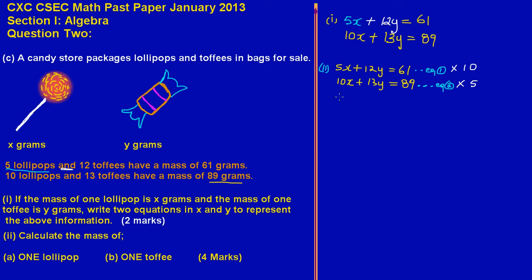Multiplying equation 1 by 10: 10 × 5x = 50x, 10 × 12y = 120y, 10 × 61 = 610 — this becomes equation 3. Multiplying equation 2 by 5: 5 × 10x = 50x, 5 × 13y = 65y, 5 × 89 = 445 — this becomes equation 4.